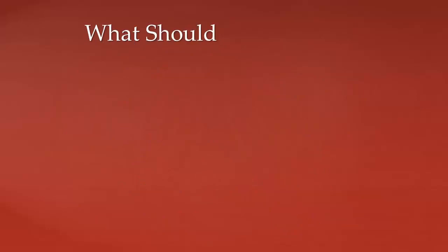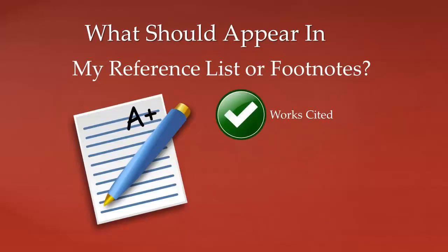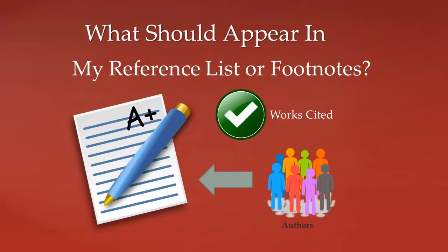Okay, so what should appear in my reference list or footnotes? In your reference list or your footnotes, you should record the works cited in your paper. The general rule is, if the author appears in your paper, you should reference them in your bibliography, reference list, or footnotes. If the author does not appear in your paper, but you have just done some additional reading, the reference does not need to appear. This is assuming that you have correctly cited the ideas in your paper to the appropriate authors.